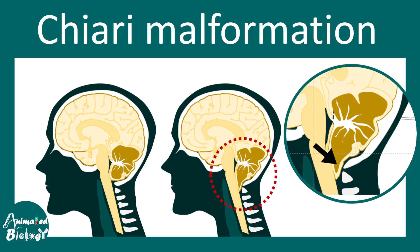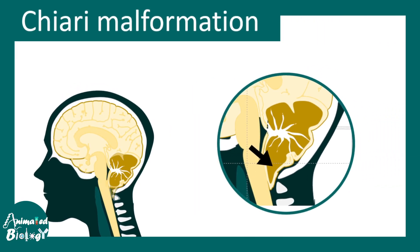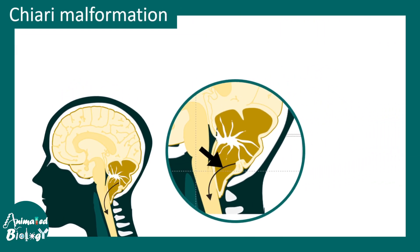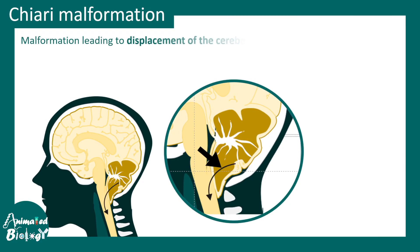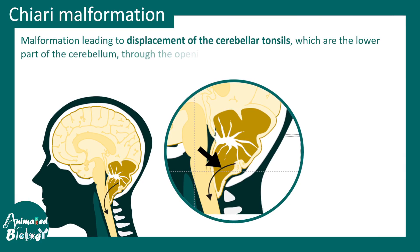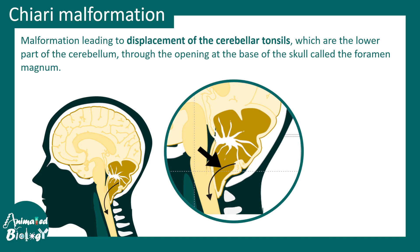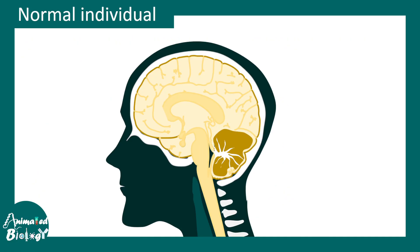In this video we'll be talking about Chiari malformation. This is one type of brain malformation where the cerebellum gets displaced downward through the foramen of the magnum into the upper spinal canal, and this kind of malformation could lead to severe problems.